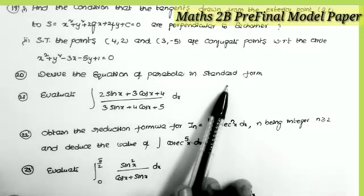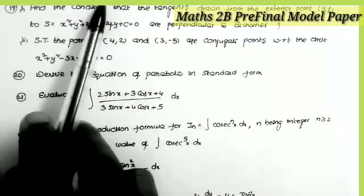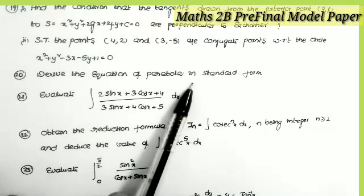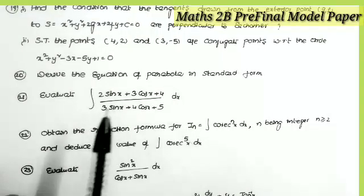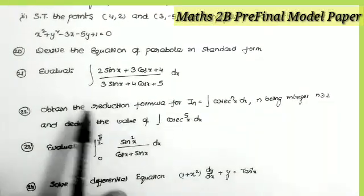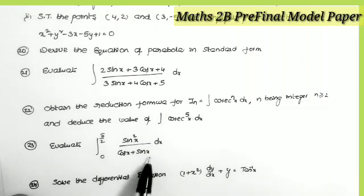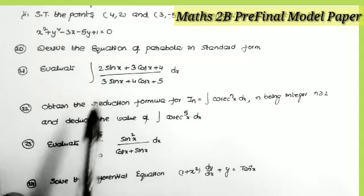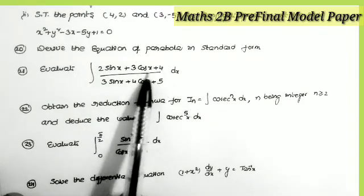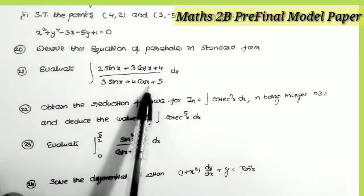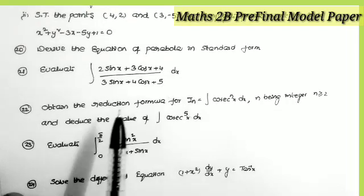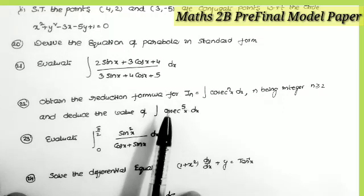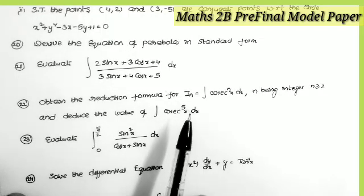Question 20: derive the equation of the parabola in the standard form. The first two seven-mark questions are from the topic circles and the third is from parabola. The remaining four questions are from calculus. Question 21: evaluate the integral of (2sinx + 3cosx + 4) / (3sinx + 4cosx + 5) dx.